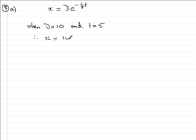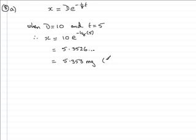So x will equal 10 multiplied by e to the minus 1 eighth times 5. If we use a calculator to work that out, we should get 5.3526 and so on. And we've got to give this to 3 decimal places and that comes to 5.353, don't forget the units, milligrams to 3 decimal places.